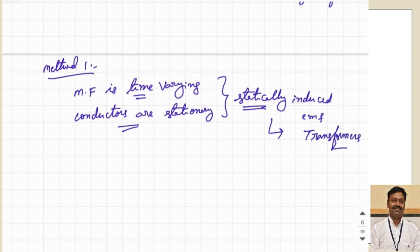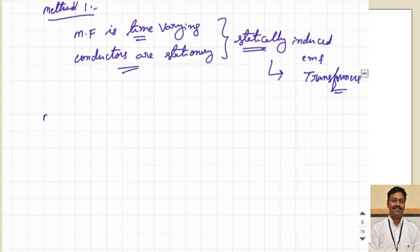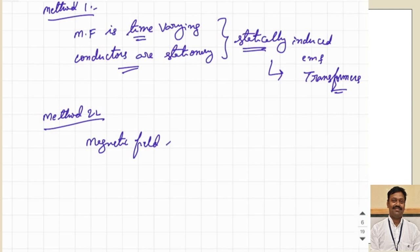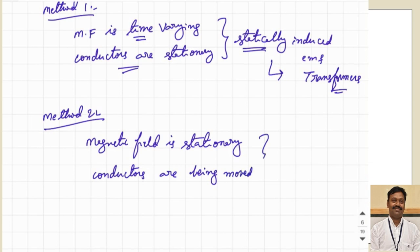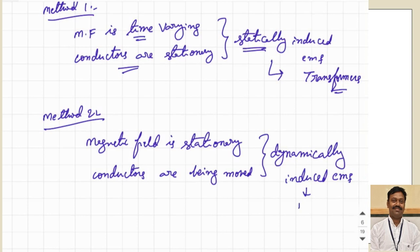The second method is useful for rotating machines. In the case of the second method, the magnetic field is stationary and the conductors are moving — or we can say the conductors are dynamic. So this is called dynamically induced EMF. This principle is used in DC machines, which we are going to see in detail now.